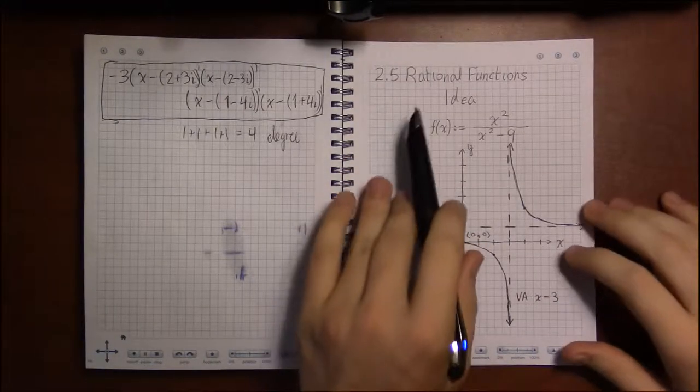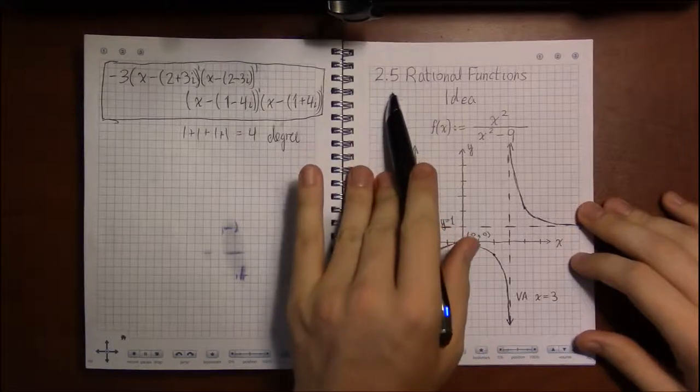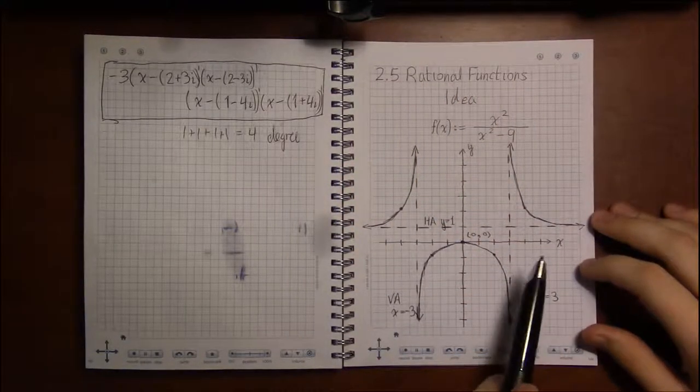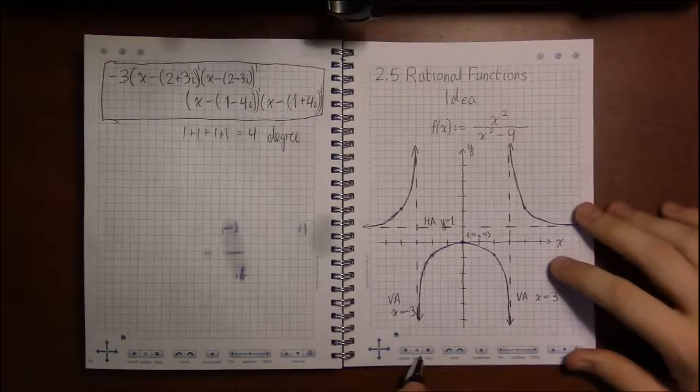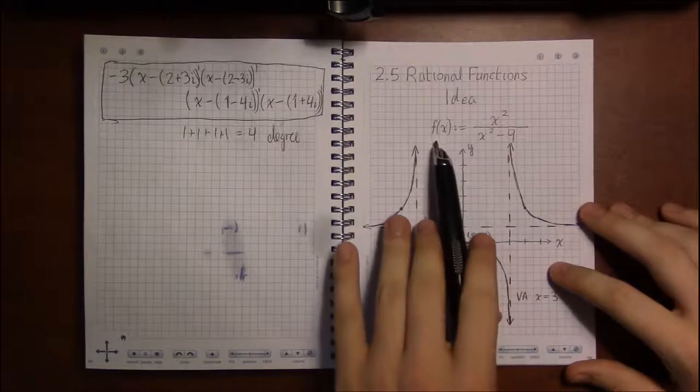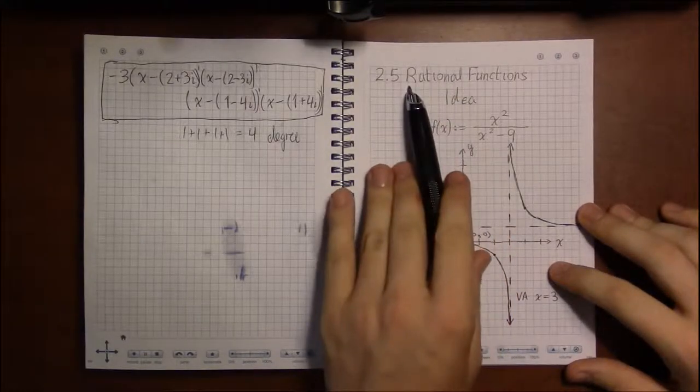We're going to finish up chapter 2 with the last section on rational functions. Rational functions are—rational is just a fancy word for fraction.